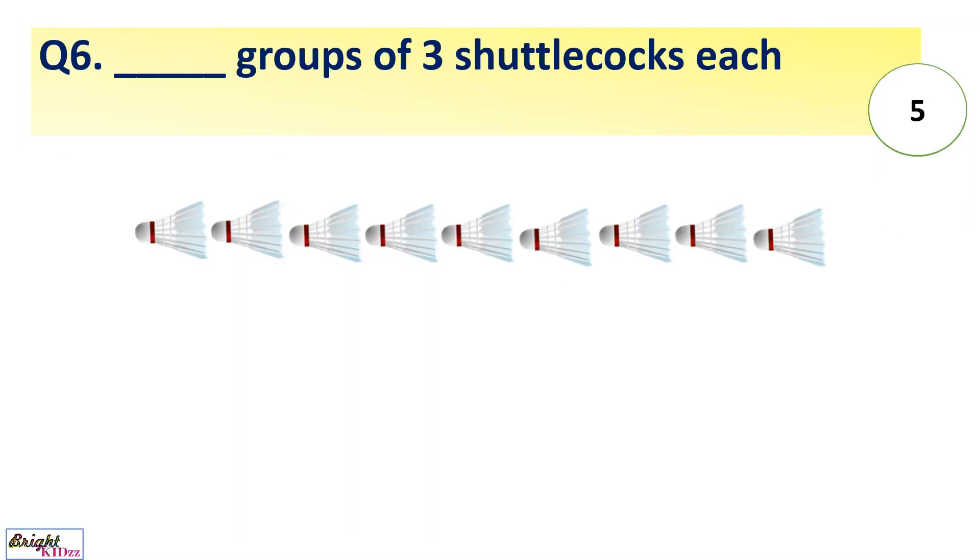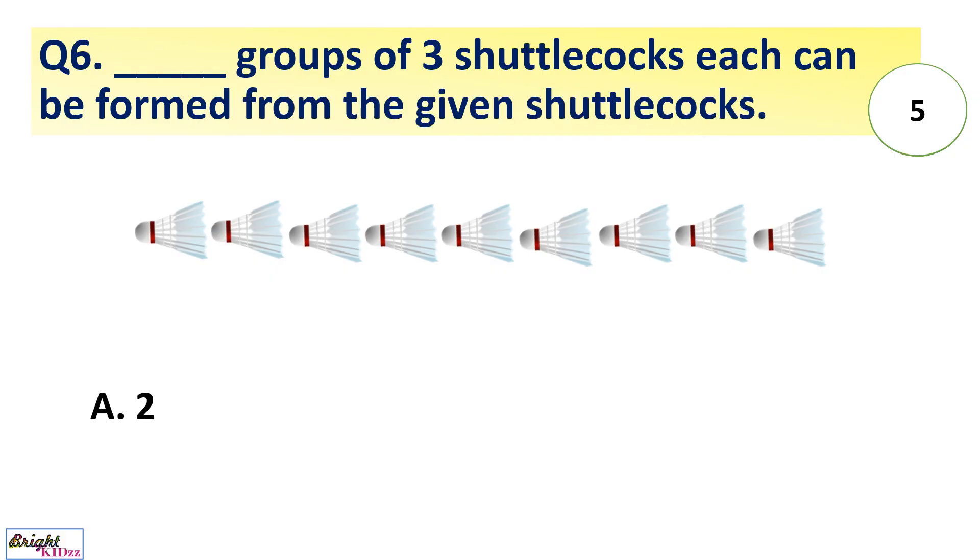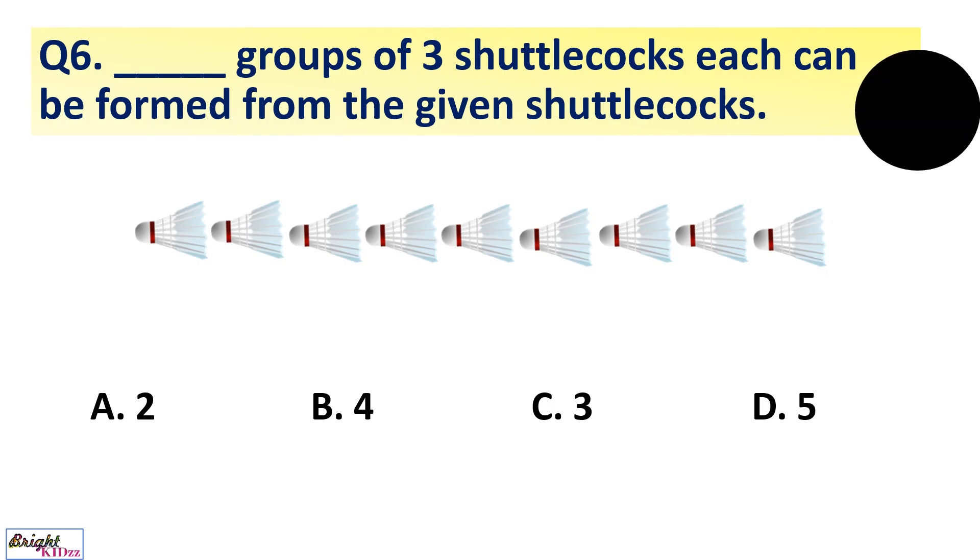Dash groups of 3 shuttlecocks each can be formed from the given shuttlecocks. 2, 4, 3, 5. We can count here 1, 2, 3, 4, 5, 6, 7, 8, 9 shuttles are there. We have to make one group of 3 shuttles, so 3 groups will be formed.